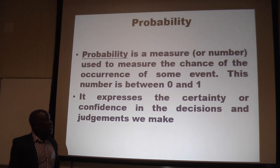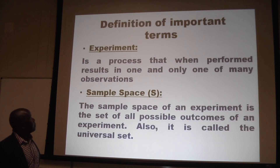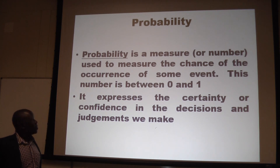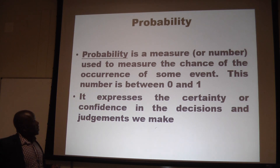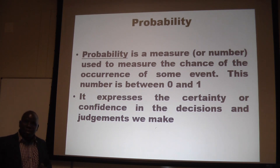What is probability? Generally, probability is a measure or a number that is used to measure the chance of occurrence of some events. When we say the probability that it will rain tomorrow, we attach a number. That number will be used to quantify the likelihood. Generally, the probability of an event lies between zero and one.